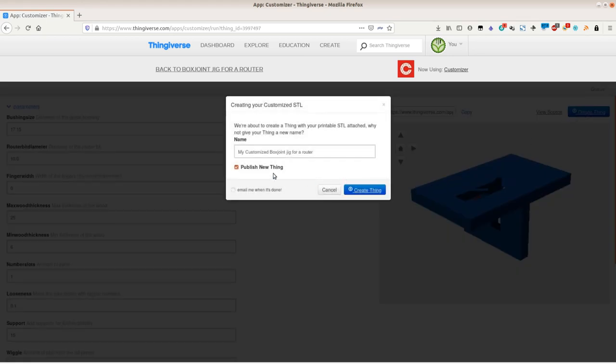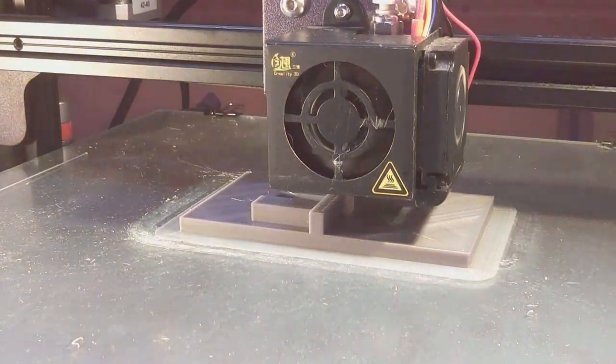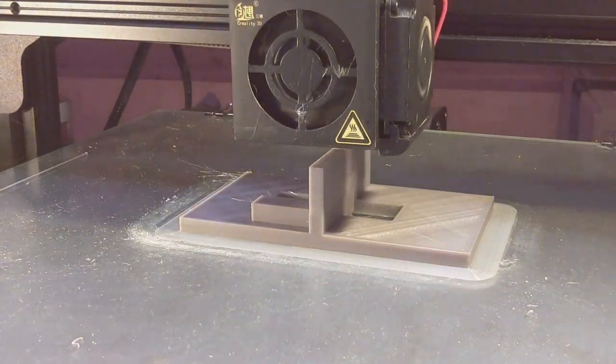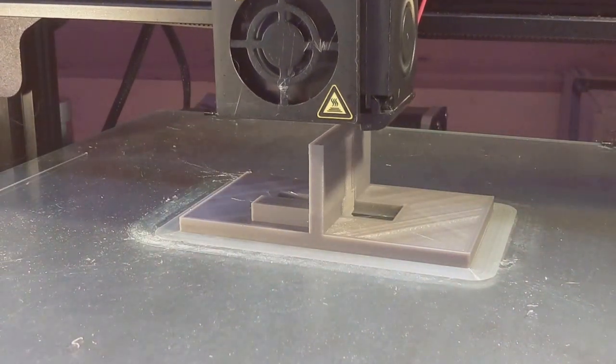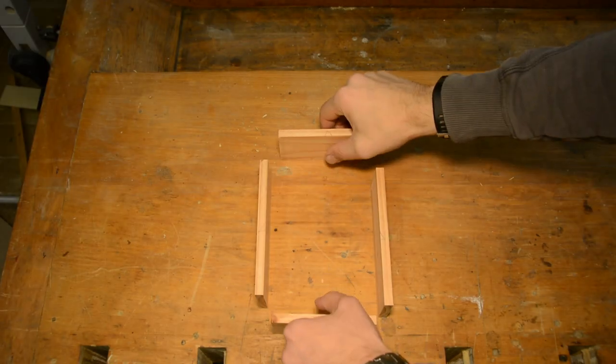After downloading the model use a slicer of your choice and send it to your printer. While the jig is printing we cut two long and two short pieces that will later form our box. All the top sides are marked.